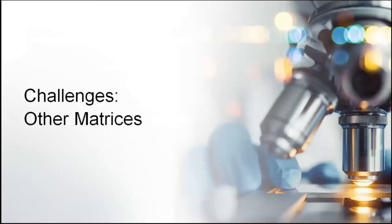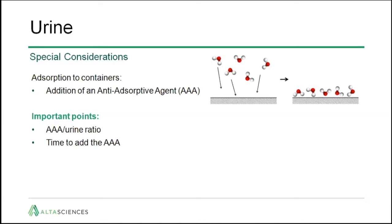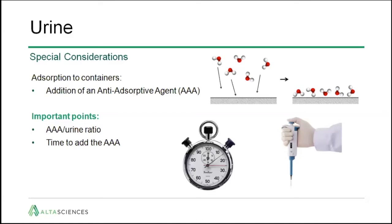There are also challenges related to different matrices. In urine, there are multiple analytes that will experience non-specific binding to the containers — essentially the absorption of your analyte onto the surface of the container. Therefore, you will have to add an anti-absorptive agent that will help release the analyte from the surface of the container. The important points are to consider the volume of the anti-absorptive agent to add to a given volume of urine collected, and the time by which you have to add this anti-absorptive agent.